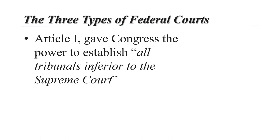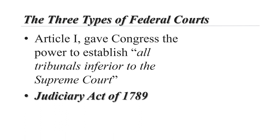The first Congress used this power to create the hierarchy of the federal court system. Under the Judiciary Act of 1789 — which incidentally was the first law that Congress ever passed — the federal judiciary is divided into a three-tiered system that still exists to this day. The lower tier consists of the district courts, the middle tier are the circuit courts of appeals, and the highest tier is essentially one court: the Supreme Court.